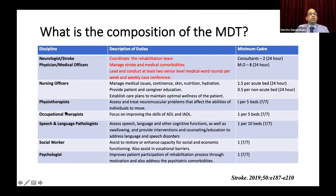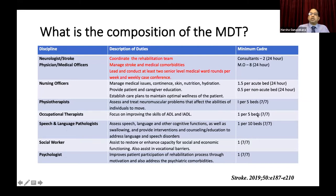Other MDT members include nursing officers, physiotherapist, occupational therapist, speech and language pathologist, social worker, and psychologist. Minimum staffing: physiotherapist — one per five beds on a seven-day rota; occupational therapist — same; speech and language pathologist — one per ten beds; plus social worker and psychologist. There are different nursing staffing levels for acute and non-acute beds.